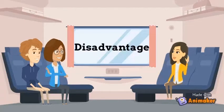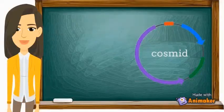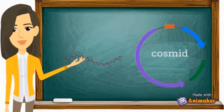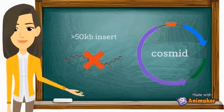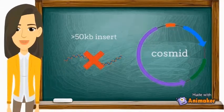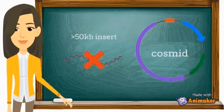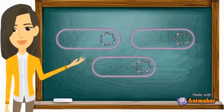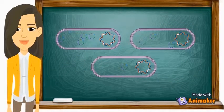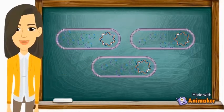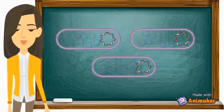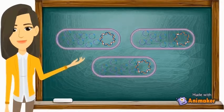Now I will talk about the disadvantages of cosmid vectors. Cosmids cannot accept more than 50 kbp of insert. The packaging fails when the distance of separation exceeds the limits. Also, some cosmid clones are unstable on propagation in their host cells due to the high copy number replication system.